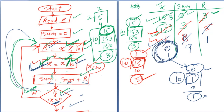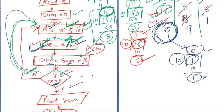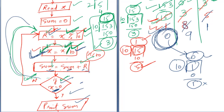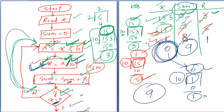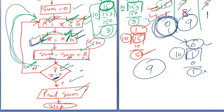So we move to the yes part. In the yes part, I simply write print sum. Whatever is in the sum field, I print it out. Sum is 9, and I print this 9 — that is the answer. Then I stop. Thank you guys, thanks for watching, and don't forget to subscribe to this channel. Thank you.